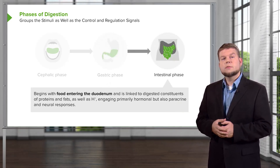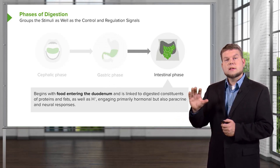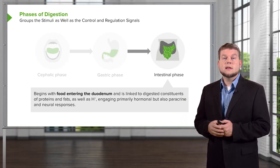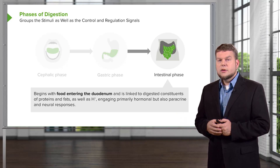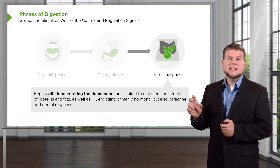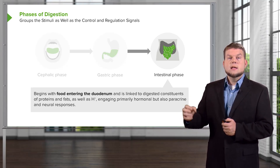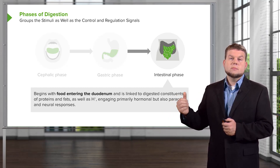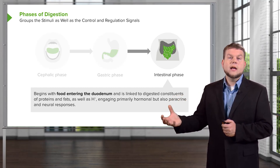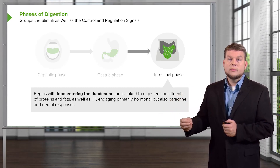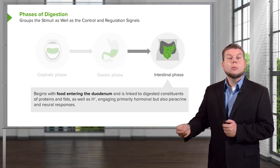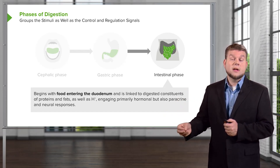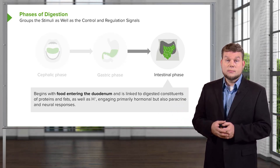Finally, in the intestinal phase, this is when the foodstuff has left the stomach and entered into the small intestine. Here it's normally linked to a bunch of digestion constituents such as large proteins, fats, and sometimes even carbohydrates. As they're broken down, it starts to stimulate hormonal responses as well as some neural responses involved in digestion.